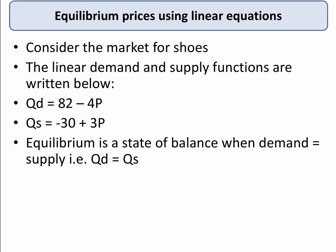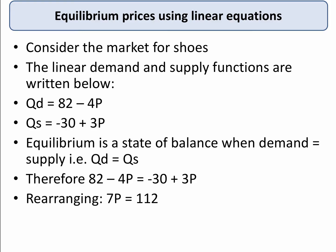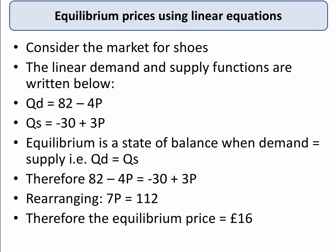So we just have to put the two equal to each other — let Qd equal Qs. Therefore, 82 minus 4p equals minus 30 plus 3p. Of course we're looking here for the equilibrium price. So rearranging, taking over the 4, 7p equals 112, therefore the equilibrium price in the market will be £16. At that price of £16, the quantity demanded and quantity supplied will be the same.